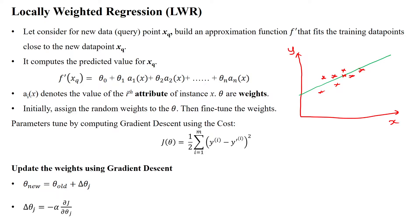Welcome to the locally weighted regression algorithm working principle. The locally weighted regression algorithm uses the data points available in the training dataset to calculate the distance between a new test data point and predicts based upon the closest data points.